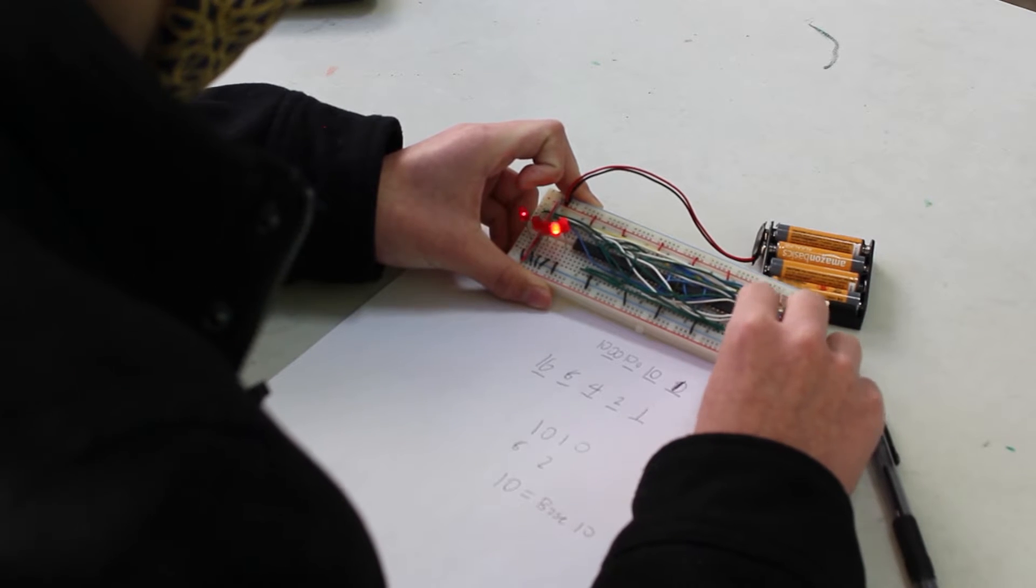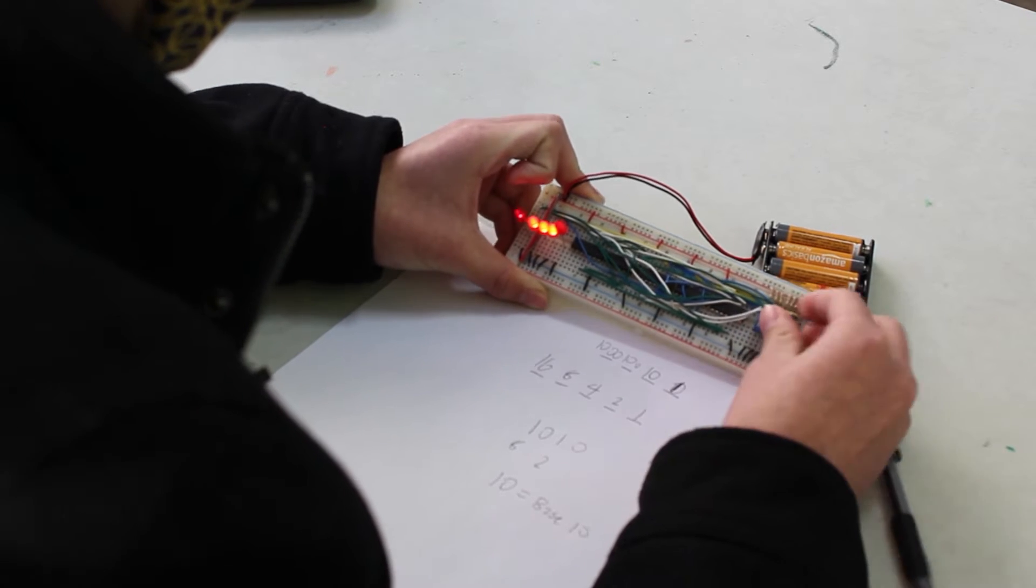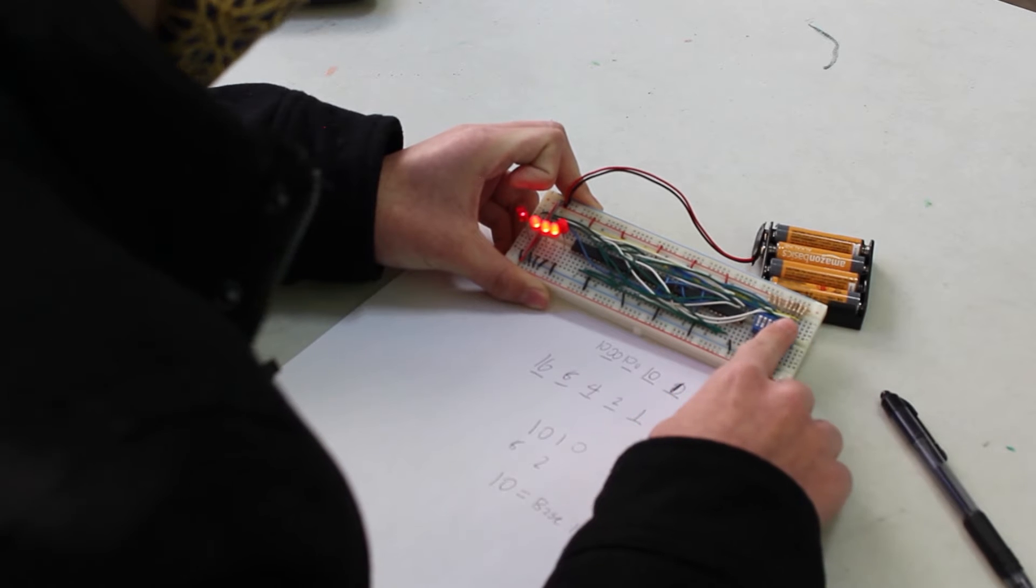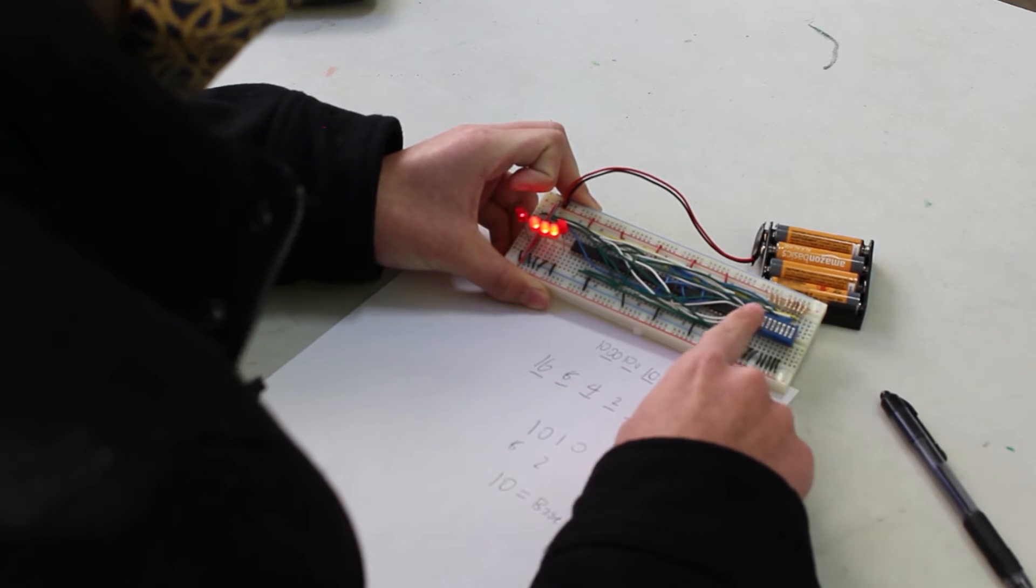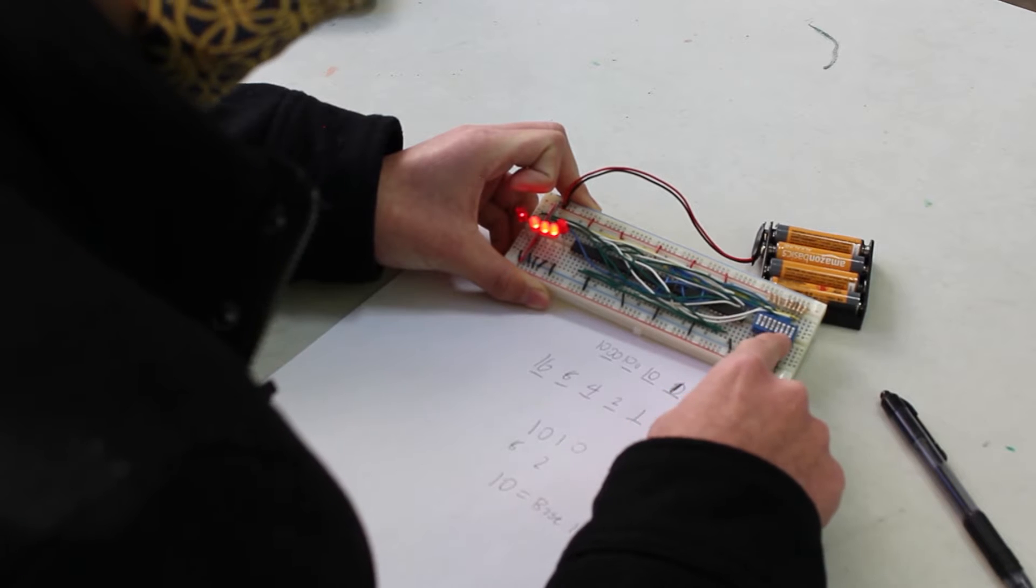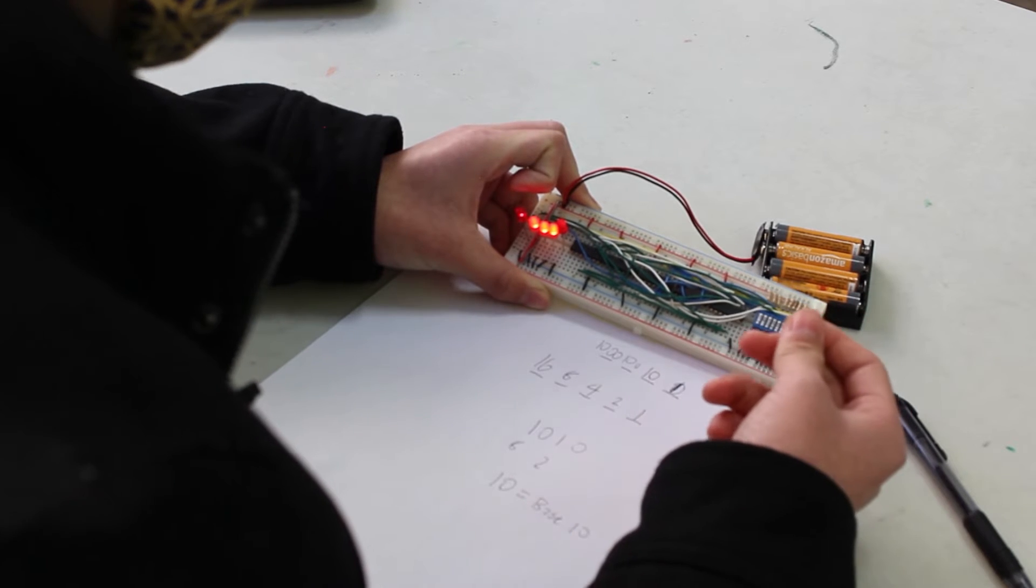If I turn all of them on, this is 15, which is 1 plus 2 plus 4 plus 8, 15. And that would be 1 plus 2 plus 4 plus 8, 15, is 30.